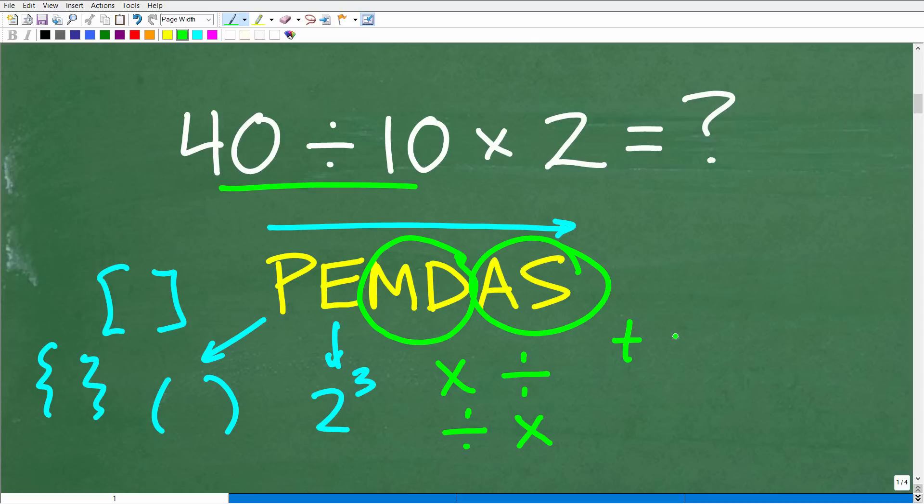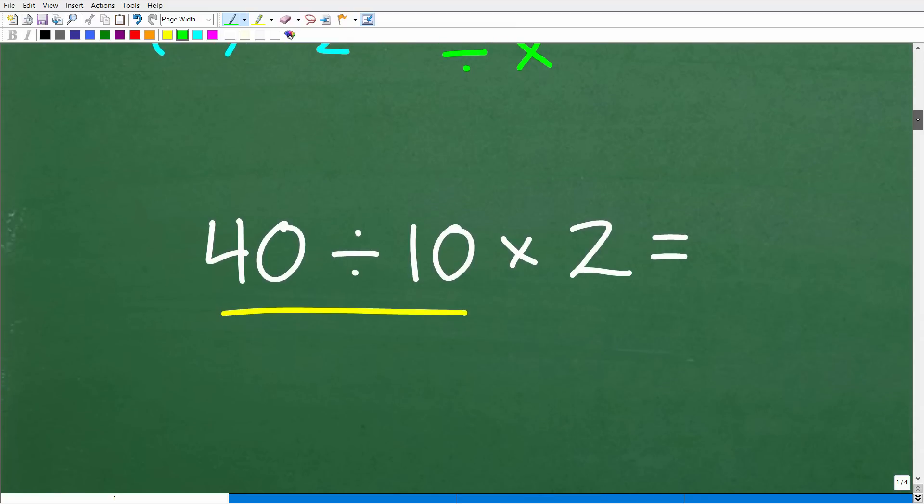So that's how M and D work. And A and S, addition and subtraction, work the same way. It's whatever we see first from left to right. Okay. So now that we understand PEMDAS, we can now do this problem pretty easily. So going down here, we're saying, all right, so let's see,